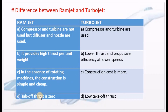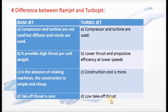The take-off thrust of a Ramjet is zero because compression is not achieved at low speeds. The velocity must be more for a Ramjet to operate. For a Turbojet, take-off thrust is available, though low take-off thrust is still relatively less compared to other engines.